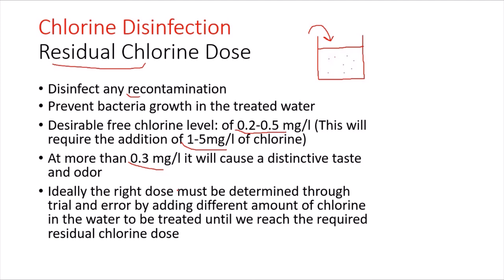Ideally, the right dose must be determined through trial and error. We have to keep testing the amount of chlorine needed in the water to be treated until we reach the required residual chlorine dose.